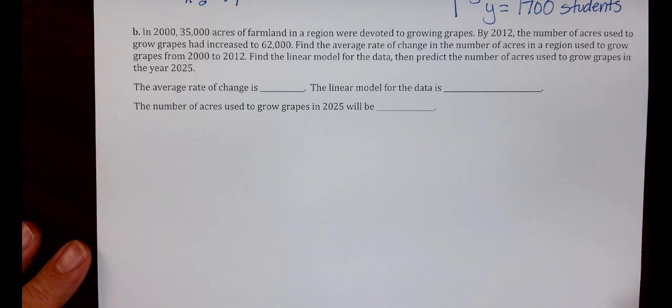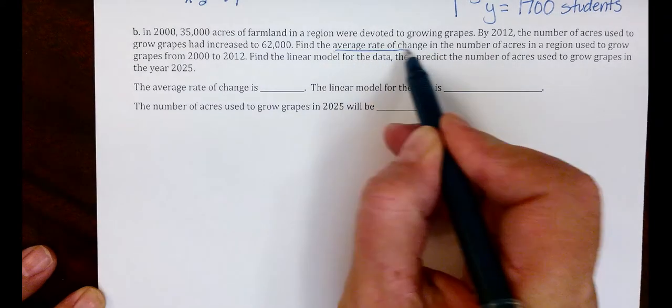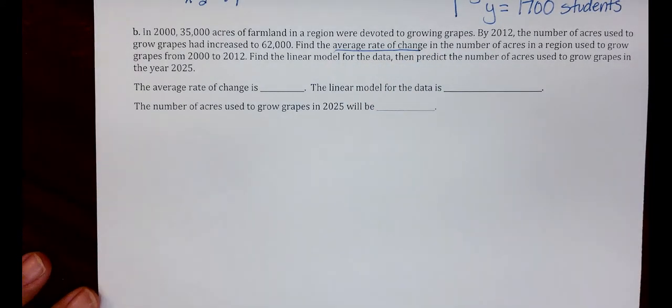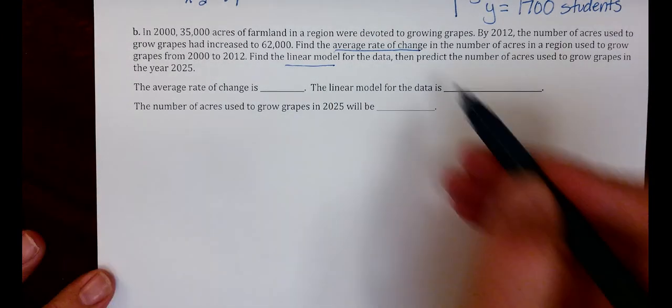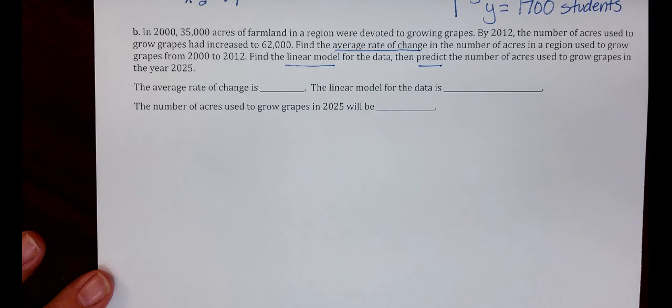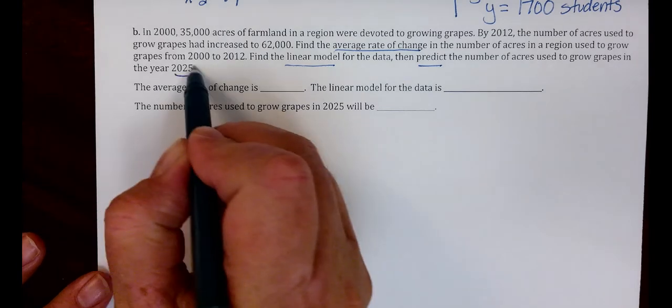In 2000, 35,000 acres of farmland in a region were devoted to growing grapes. By 2012, the number of acres used to grow grapes had increased to 62,000. Find the average rate of change in the number of acres in a region used to grow grapes from 2000 to 2012. Find the linear model for the data, then predict the number of acres used to grow grapes in the year 2025.